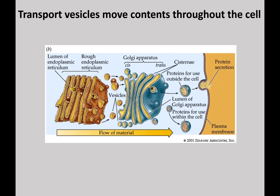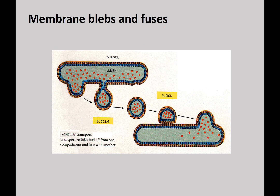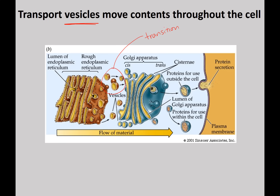One thing I want to bring up is this idea of vesicles. Your book distinguishes transition vesicles — which go from the ER to the Golgi — and secretion vesicles for transport going to the plasma membrane. But honestly, transport vesicle covers them all. A lot of times you'll just hear me call them transport vesicles and not the specific kinds. For me, both are correct.